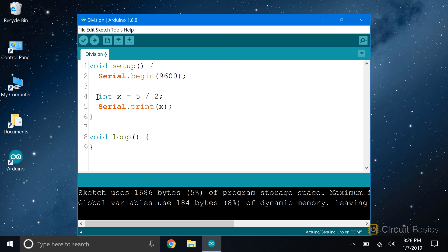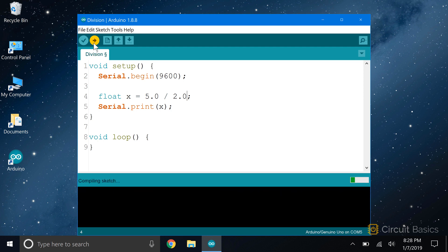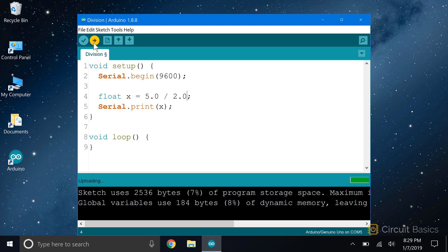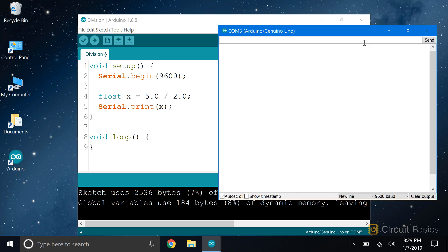If we change this to a float instead of an int and change these whole numbers to decimals, we should get the correct answer. There we go, x equals 2.50.